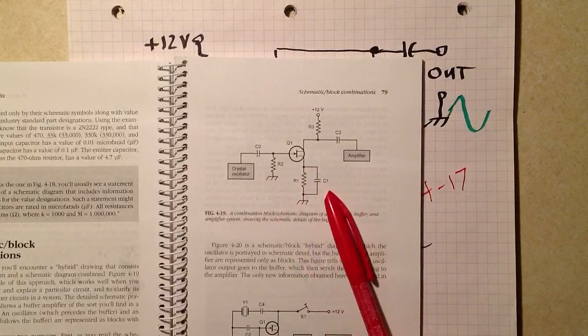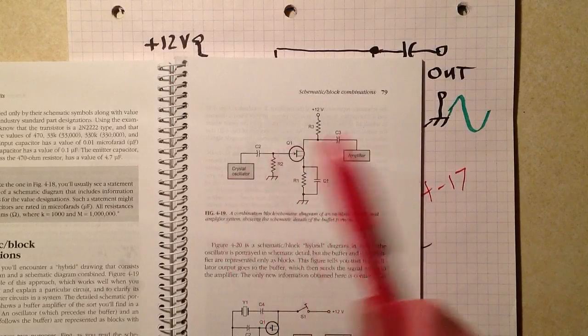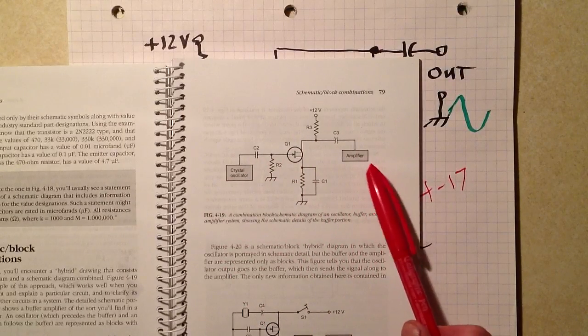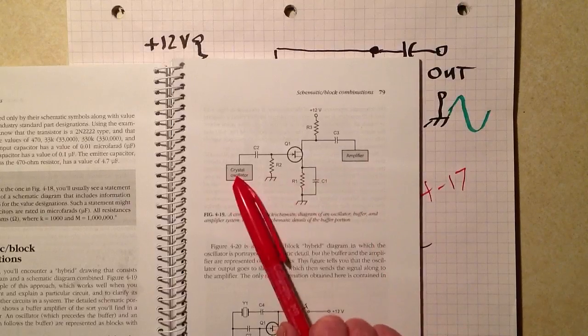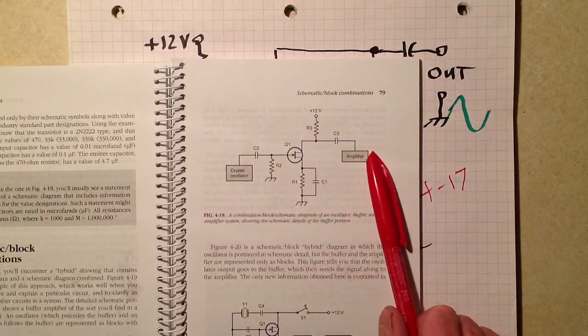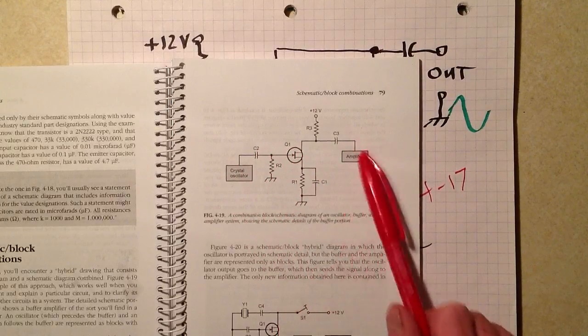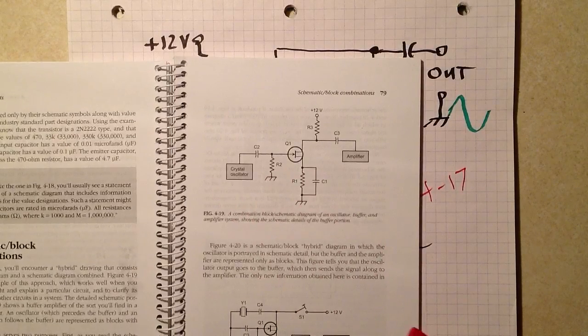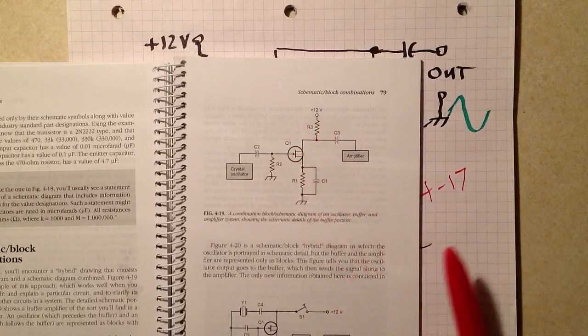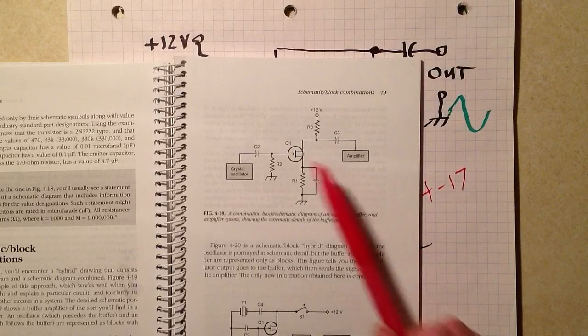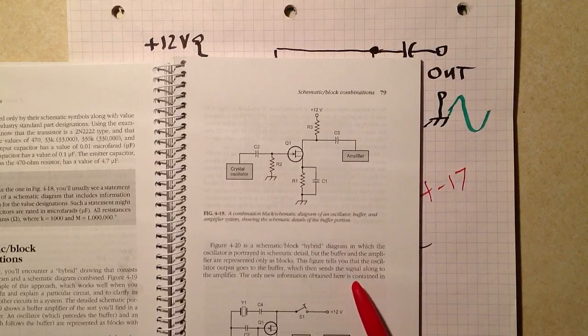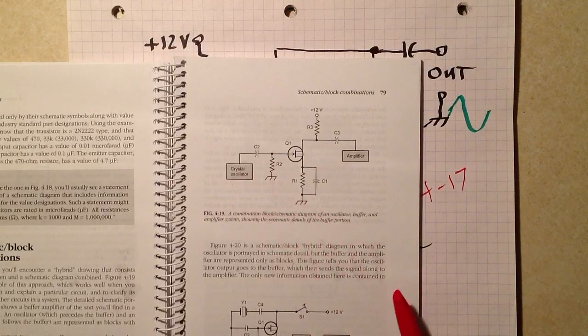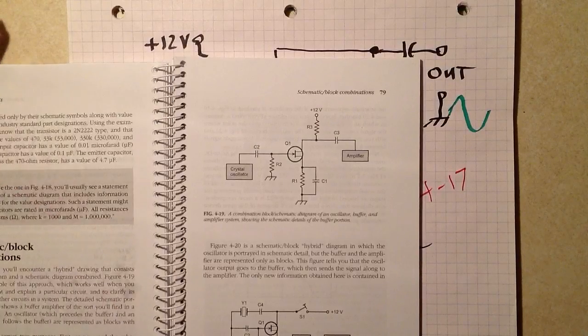It helps to prevent impedance reflections that could, for example, in the case of an oscillator, buffer, and amplifier, the buffer helps keep the amplifier from loading down the oscillator to the point where it won't oscillate anymore. That buffer provides a high-impedance input so that it doesn't load down this oscillator very much.